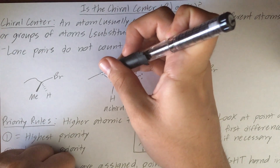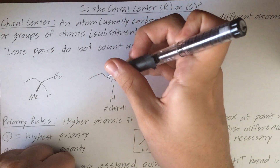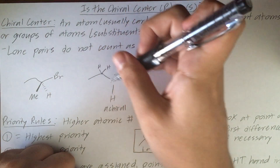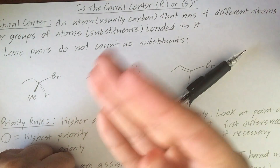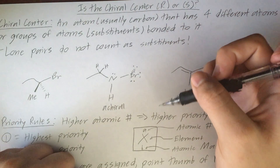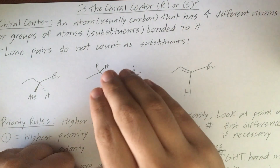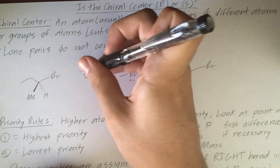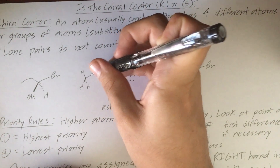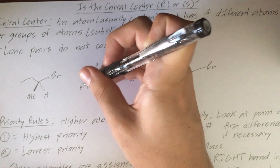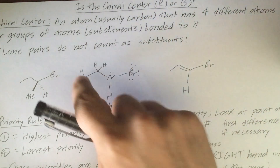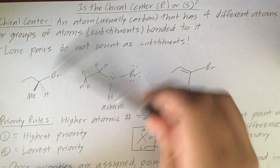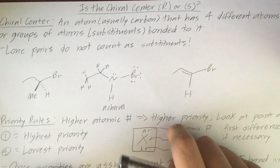Now let's look at this carbon atom. It has four substituents: one group, another group, and two hydrogen atoms. However, two out of its four substituents are the exact same because these two hydrogen atoms are equivalent. Therefore, this carbon atom does not have four different substituents and cannot be a chiral center. Similarly, this other carbon atom has three hydrogens bonded to it — three of its four substituents are the exact same — so this center is also achiral.